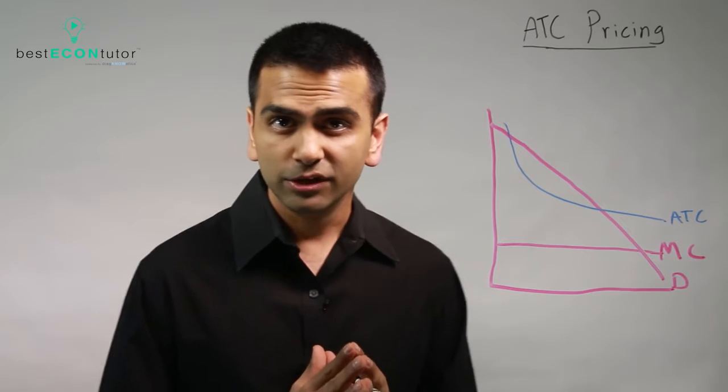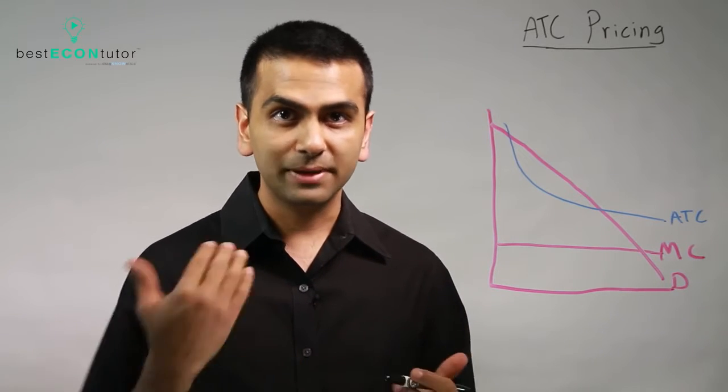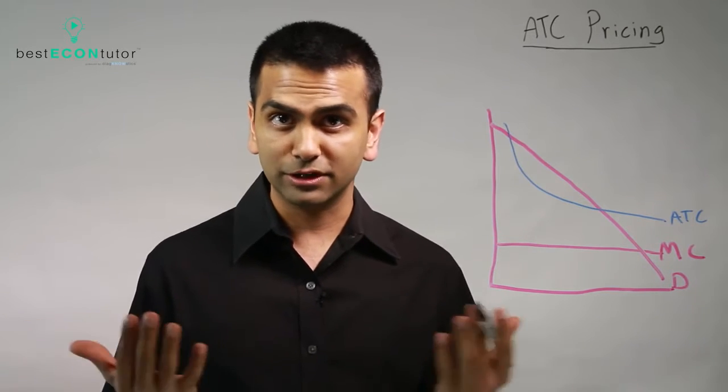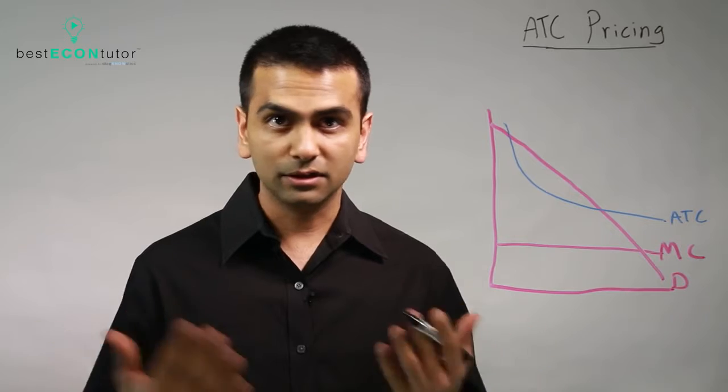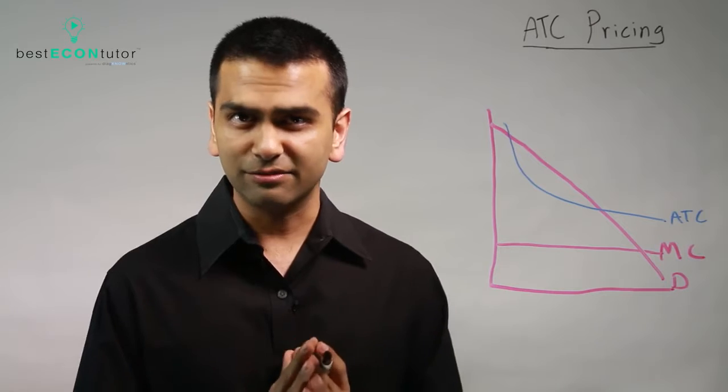So what's your marginal cost? Well, it's not that much, right? It's peanuts—literally a bag of peanuts is your cost of having one more passenger on a flight. So here's the problem with MC pricing: if you were forced to charge P equals MC, which is what perfect competition does, you would literally have to charge everyone like a dollar per flight if that's what your marginal cost is, but then you're going to make a loss. So let's look at a graph. Let's see what happens in that case.